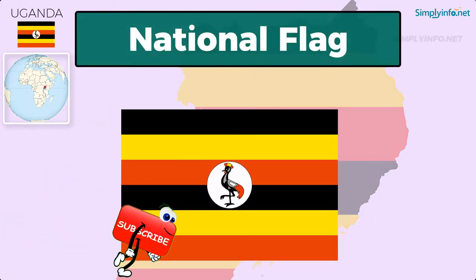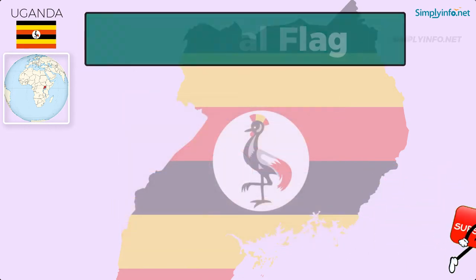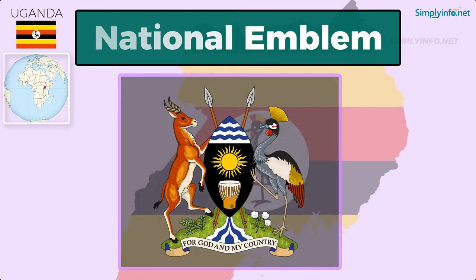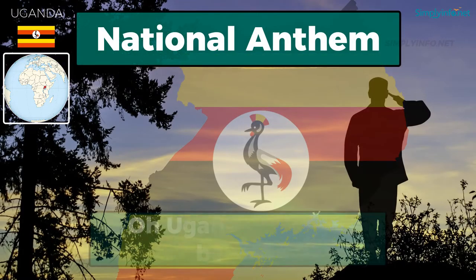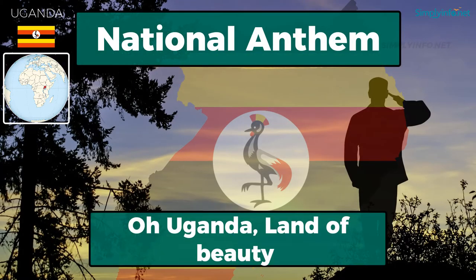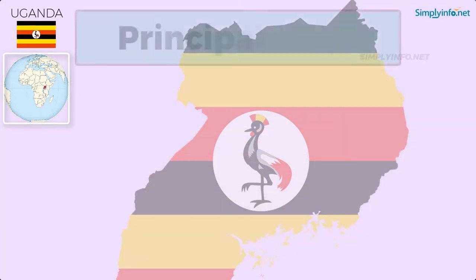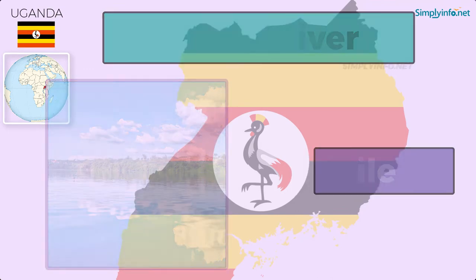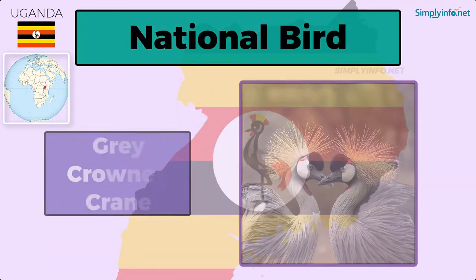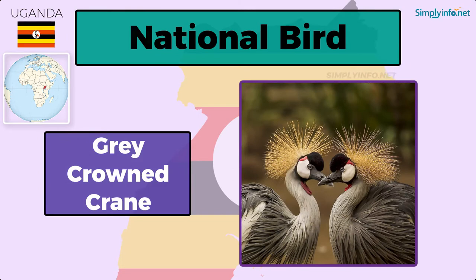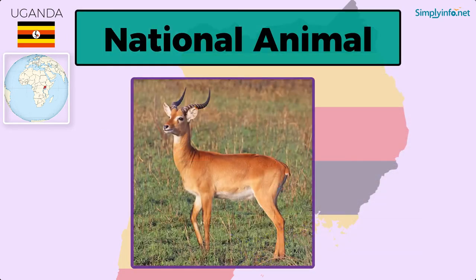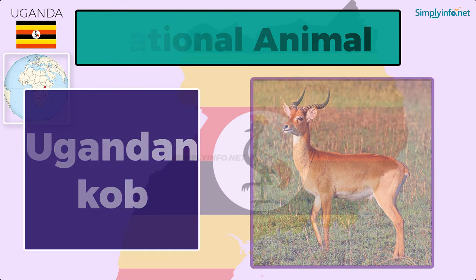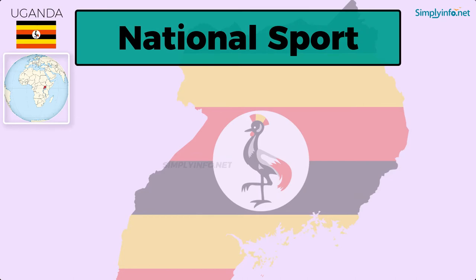National Flag. National Emblem. National Anthem: O Uganda, Land of Beauty. Principal River: Nile. National Bird: Gray-crowned Crane. National Animal: Uganda Kob. National Sport: Football.